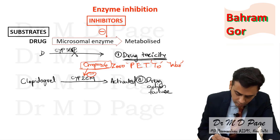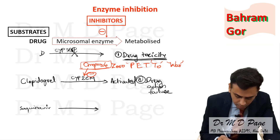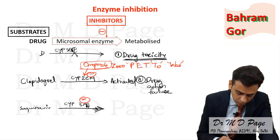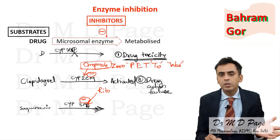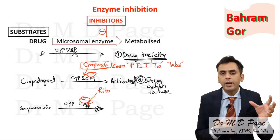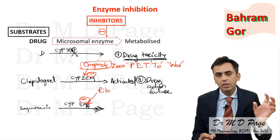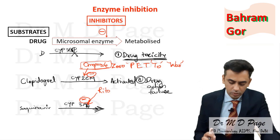Enzyme inhibition has also been used clinically. Protease inhibitors like saquinavir, indinavir, and atazanavir are metabolized and inactivated by CYP3A4. Ritonavir, also a protease inhibitor, inhibits CYP3A4. So low-dose ritonavir is used together with other protease inhibitors like saquinavir and atazanavir in HIV therapy — ritonavir inhibits the metabolism of saquinavir, boosting its activity.